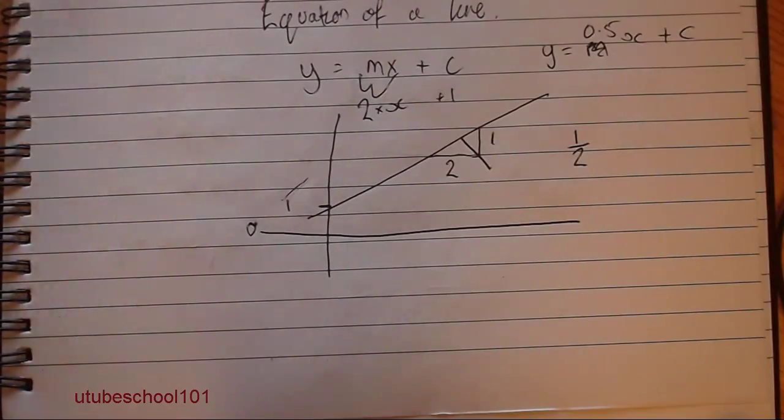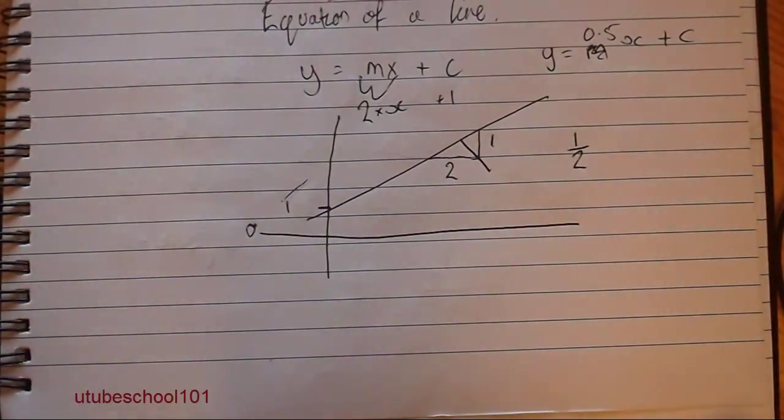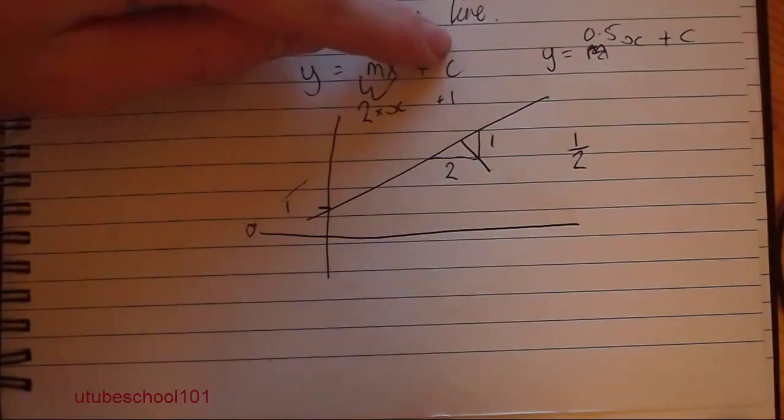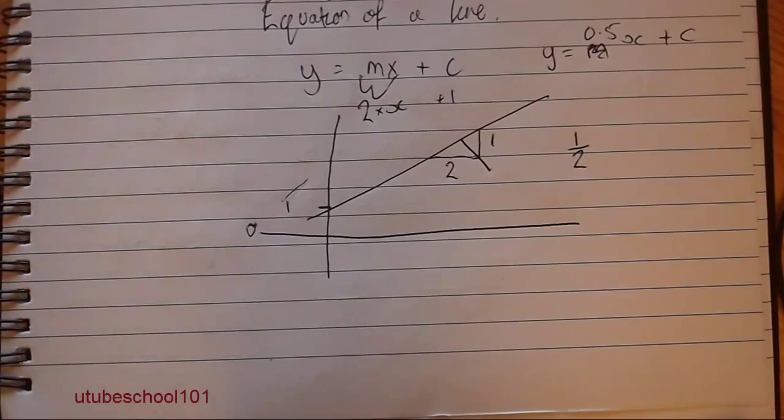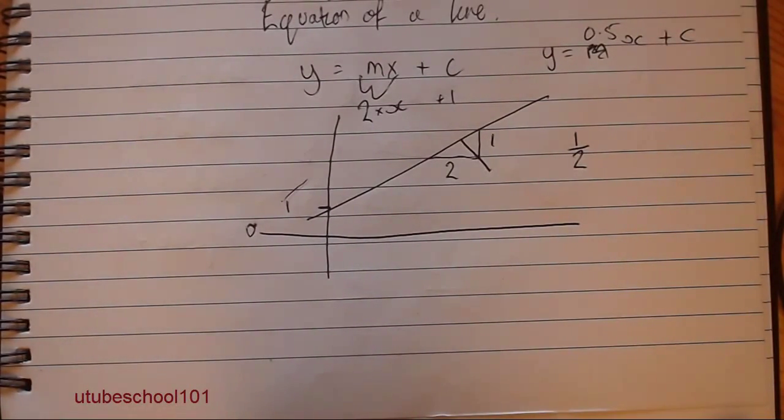The gradient will be the same no matter what this c is. So you've just got to remember that the mx bit is the gradient. The c bit is where the line crosses the y axis. And that's pretty much how you're going to plot your graphs.